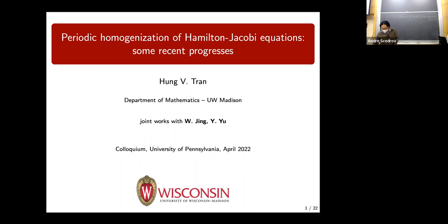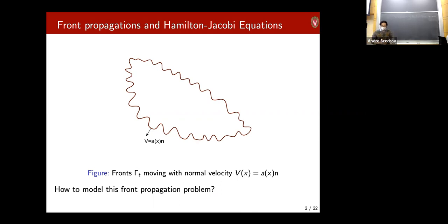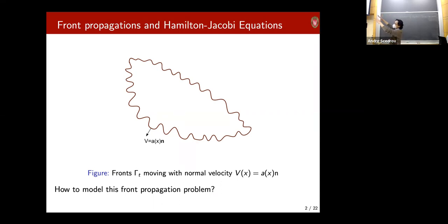I will start with something very simple: why Hamilton-Jacobi equations? This equation has a history of 200 years, but I'm going to start with a more modern approach. We start with a very simple geometric motion — we start with a front. In multi-d it's a manifold of dimension n minus one; in 2D it's just a closed curve. At the starting point we just set gamma zero.